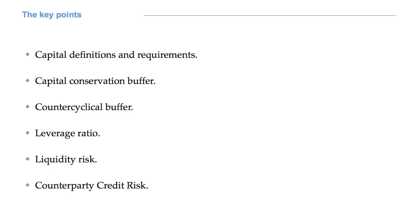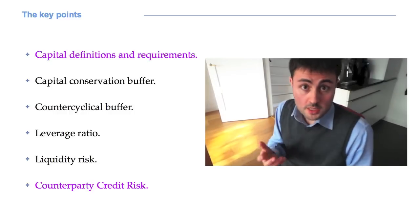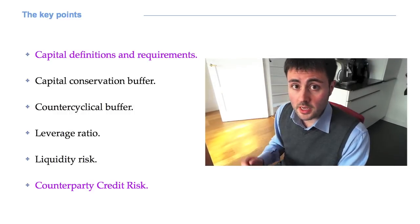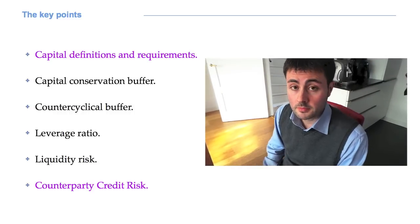Basel 3, as we have said last time, is not a major transformation of Basel 2, but rather an attempt to overcome the flaws of Basel 2. The key points of Basel 3 are new capital definitions and requirements, the introduction of the so-called capital buffers, a stronger attention for leverage ratio and liquidity risk, and a stricter definition and treatment of counterparty credit risk. For us, in this course, the first and last points are the most important.